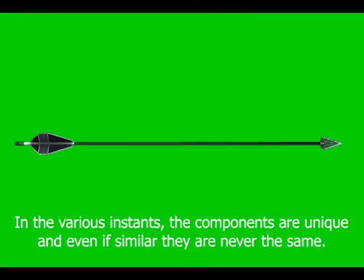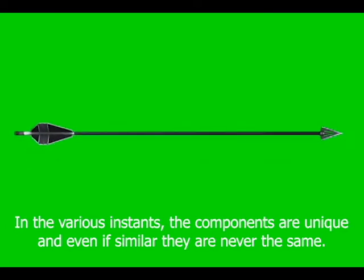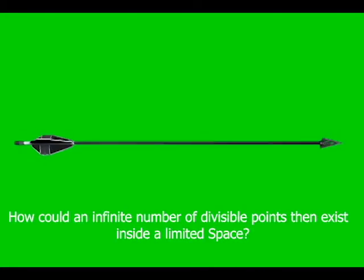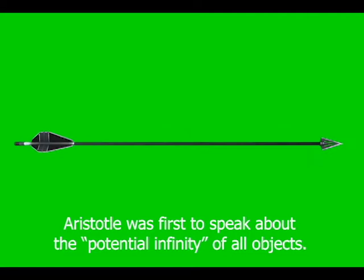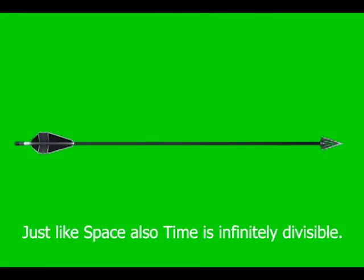In the various instances, the components are unique, and even if similar, they are never the same. How could an infinite number of divisible points exist inside a limited space? Aristotle was first to speak about the potential infinity of all objects. Just like space, time is also infinitely divisible.